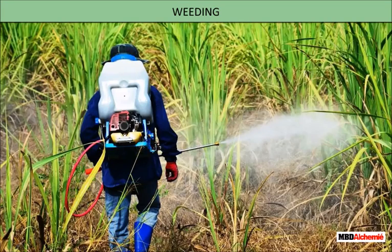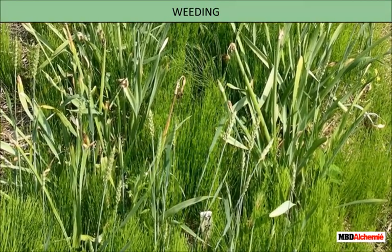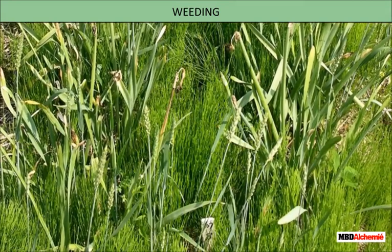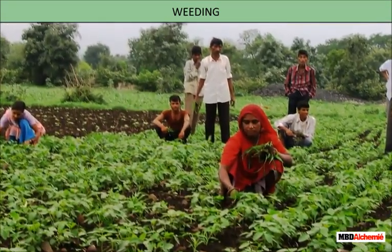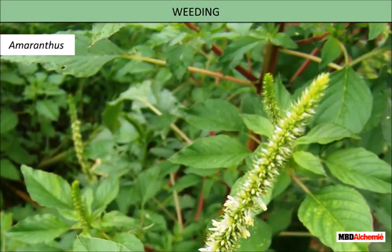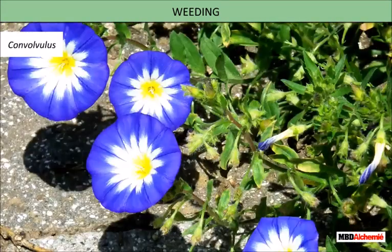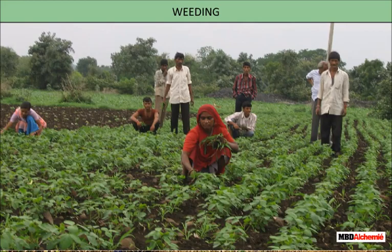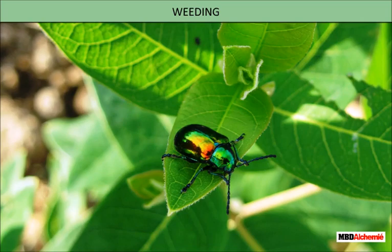Weeds are the unwanted plants that grow along with the main crop and compete with them for sunlight, nutrients, water, space, etc. Specific types of weeds grow with a particular crop. Removal of weeds is called weeding. Some common examples of weeds are Amaranthus, Chenopodium, Wild Oat, Parthenium, and Convolvulus. Weeds can be removed by pulling them out by hand, spraying weedicides, and by insects that eat them.